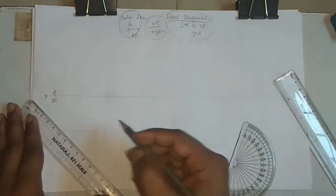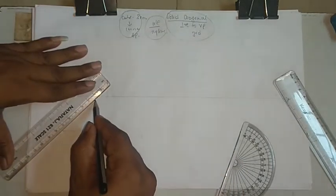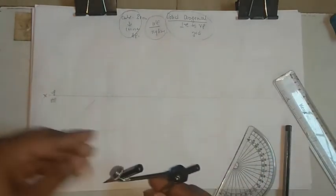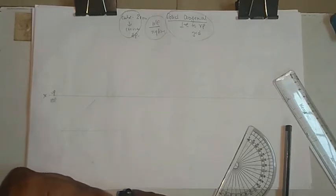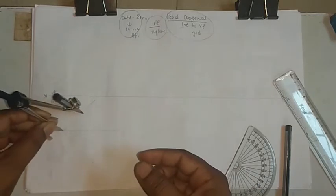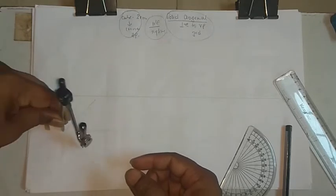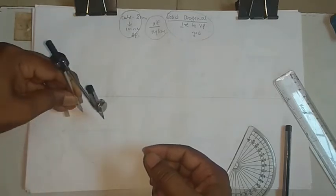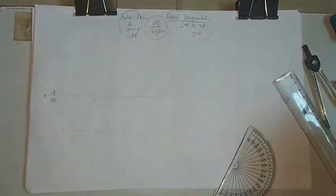Join these with a thin line. Now with the compass set to 30mm, cut from the reference point to make sure it cuts on the same arc - it will be on the same point.